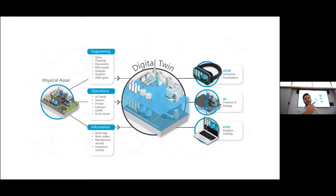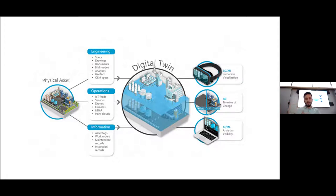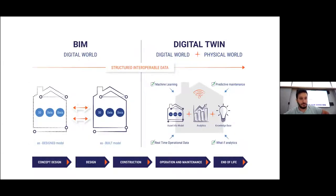From an engineering perspective you need the BIM model, specifications, and geotechnical data. From an operations perspective you need IoT sensors, drones, cameras, and point clouds. From an information perspective you need work orders, maintenance records, and inspection records. The output is 3D, VR, 4D timeline visualization, historical data, prediction analysis, and analytics.